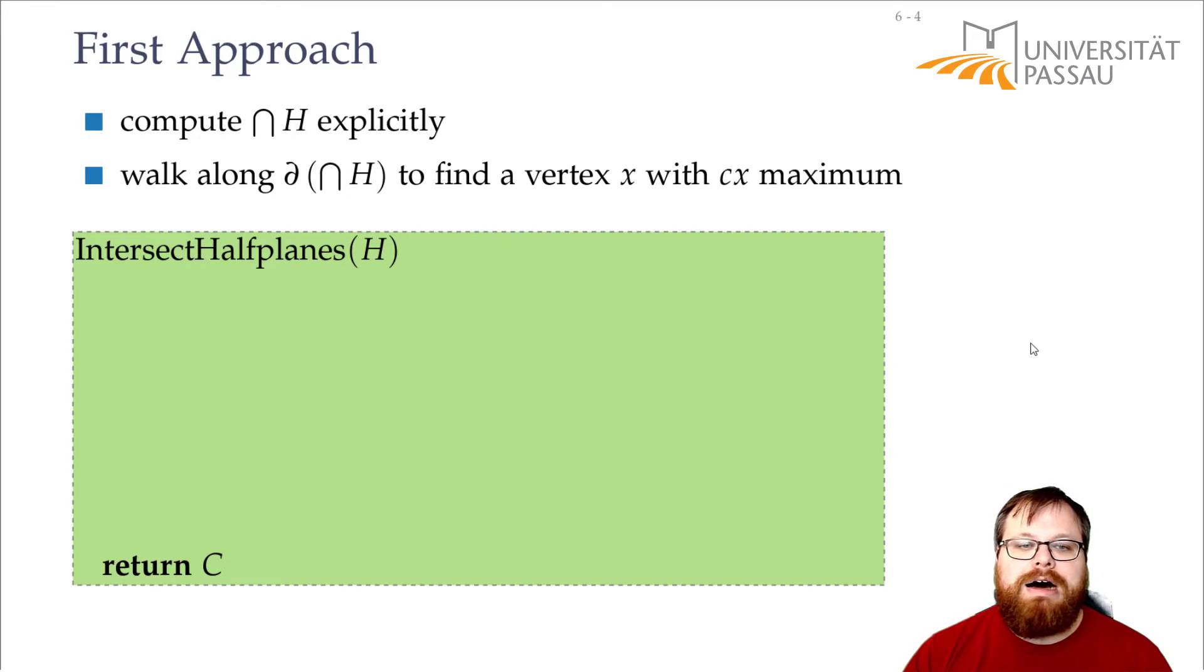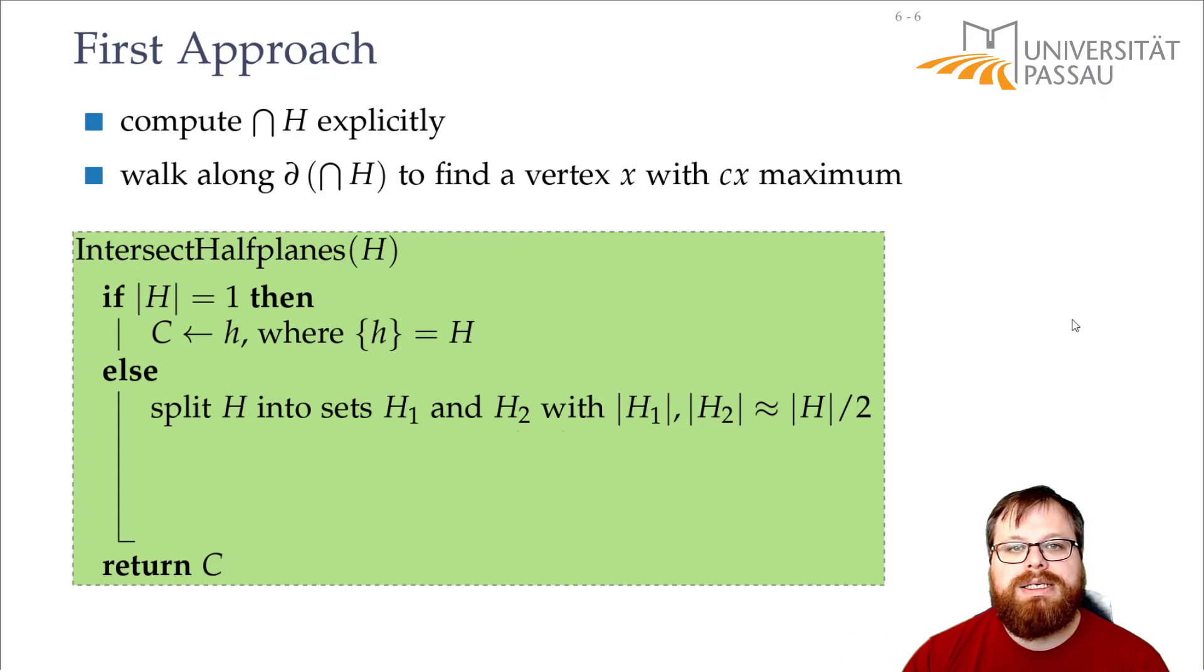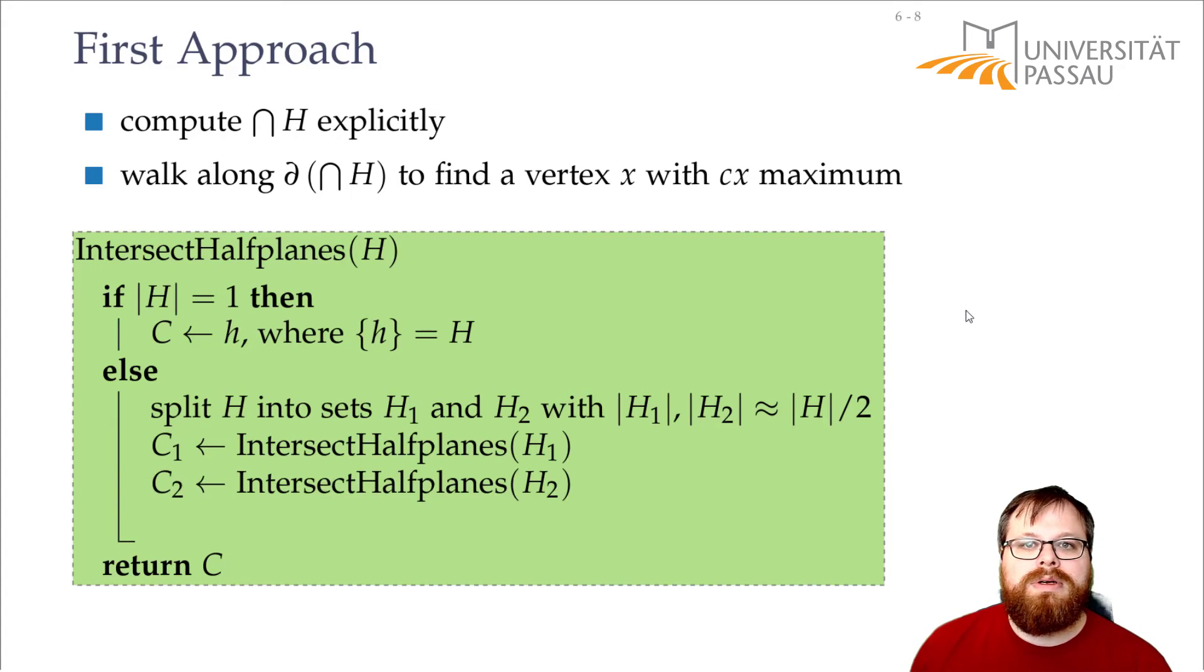So our first intersect half planes algorithm looks like this. If there's only one half plane, then our solution C is exactly this half plane. If there are more, then we split it into two sets that contains half of the half planes. So one of them is rounded down and the other one is rounded up. And then we have to recursively solve them. So then we have to recursively call intersect half planes for H1 and for H2. And what now? Now we have recursively intersected all the half planes H1, we have recursively intersected all the half planes H2. But how can we combine this solution? That's the conquer part. This is the divide part, but the conquer is still missing.